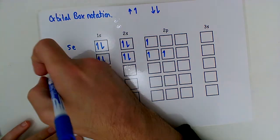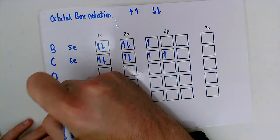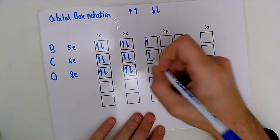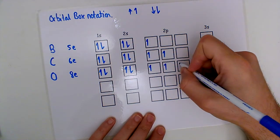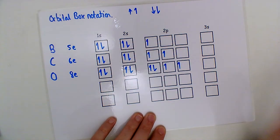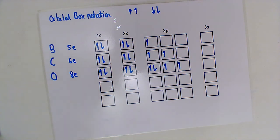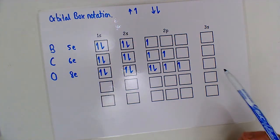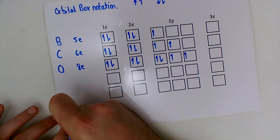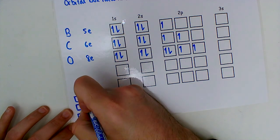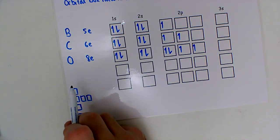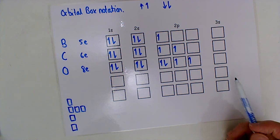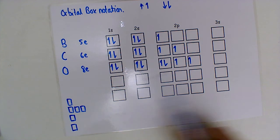Oxygen has eight electrons. After filling 1s² and 2s², we have six electrons for the 2p orbitals. By Hund's rule, we first put one electron in each of the three p orbitals, then pair — so the eighth electron pairs with the first. The orbital box diagram can be drawn horizontally (lowest energy to the left) or vertically (lowest energy at the bottom). The horizontal layout is more common — always start from the left.